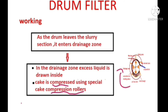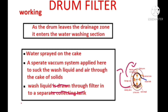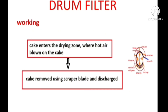The drum leaves the drainage zone and enters the washing zone. In the washing zone, water washing of the cake occurs — water is sprayed on the cake. A separate vacuum system is applied here to suck the wash liquid, and this wash liquid is collected into a separate collecting tank also present in the center of the drum filter.